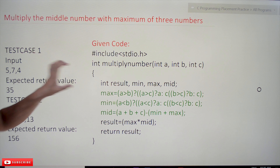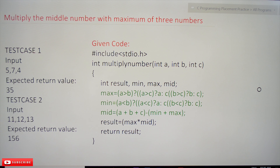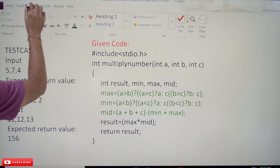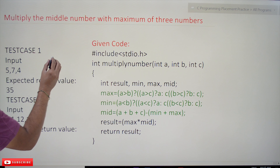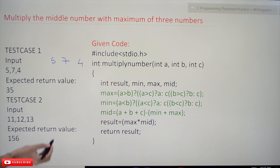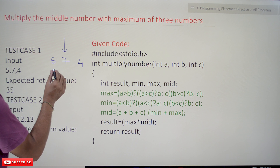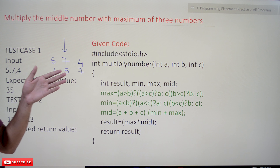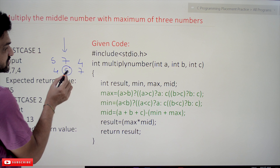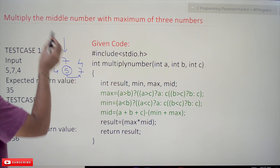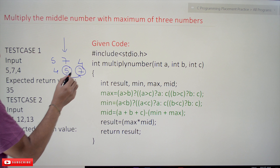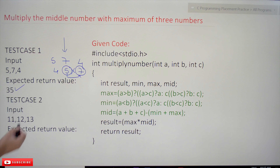This is our first program of this kind. We have to multiply the middle number with the maximum of three numbers. Three numbers are provided: 5, 7, 4. We have to find the middle number. The middle number is 5 — not 7 — because if arranged in increasing order, 5 is in the middle. The middle number 5 multiplied by the maximum 7 gives 35. For the second test case, the middle number is 12, and 12 × 13 = 156.